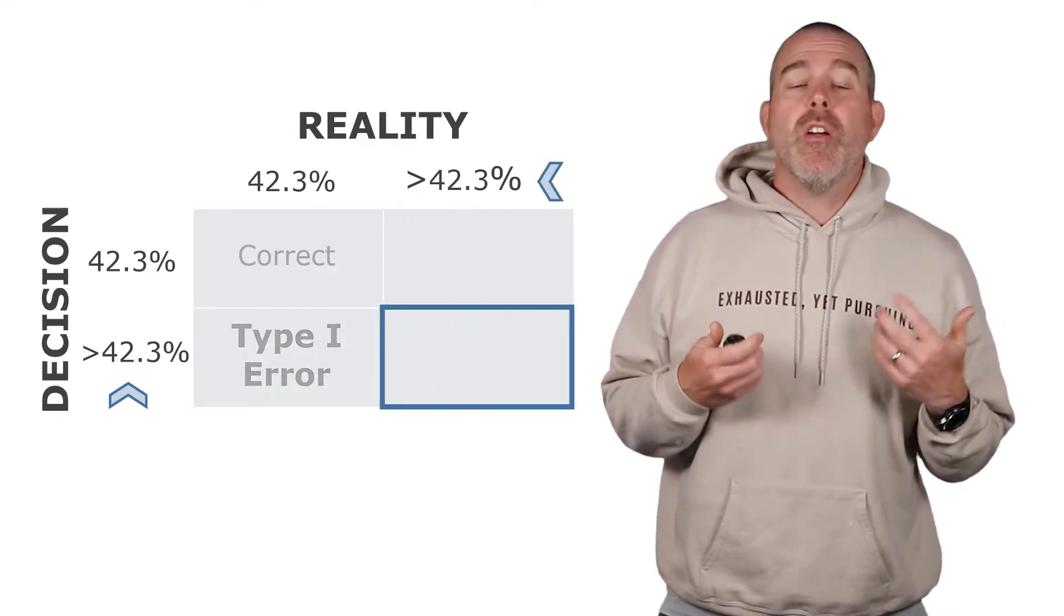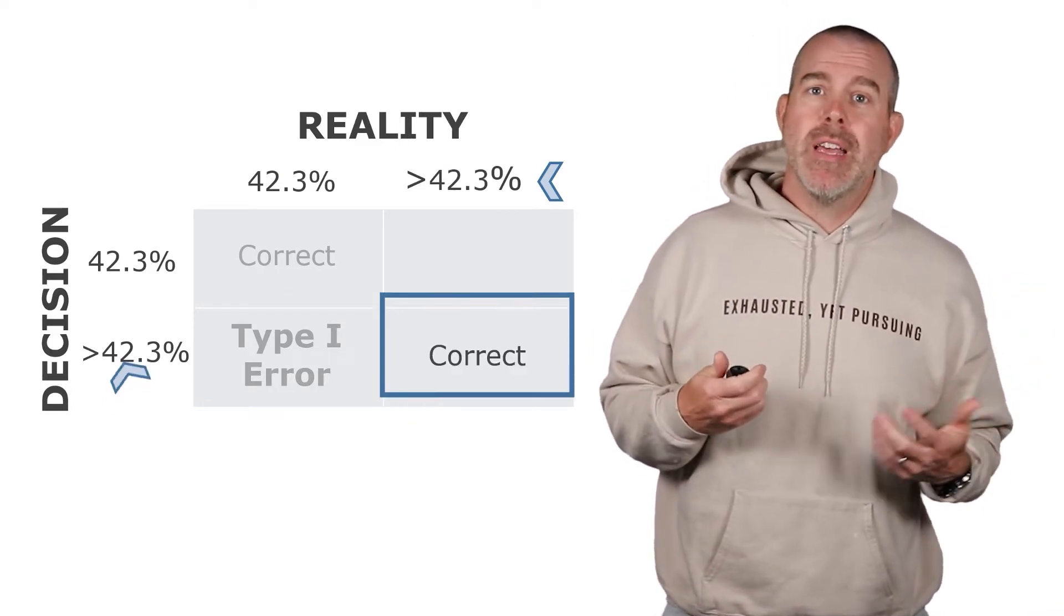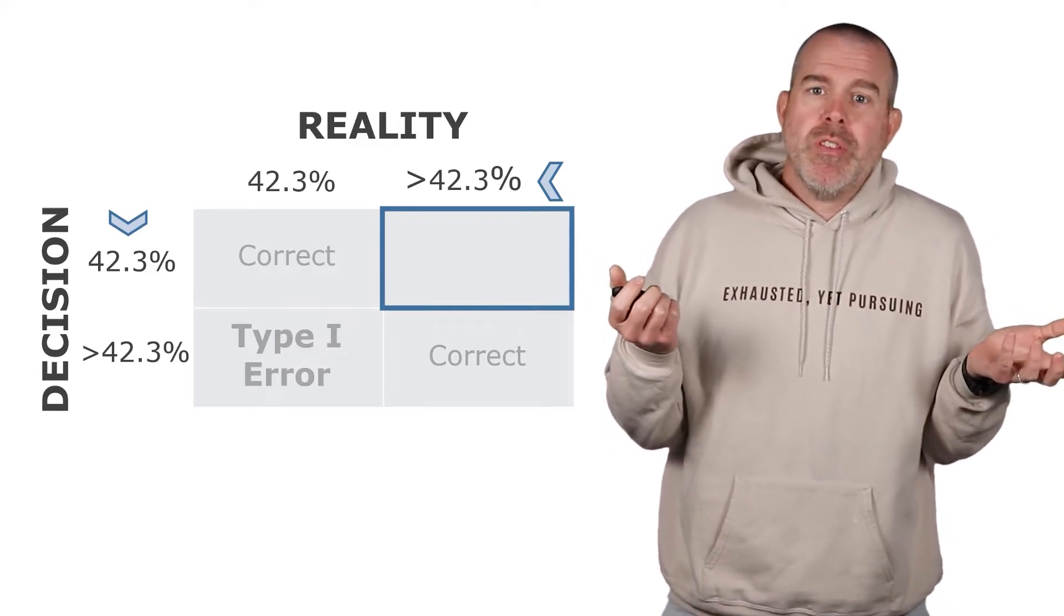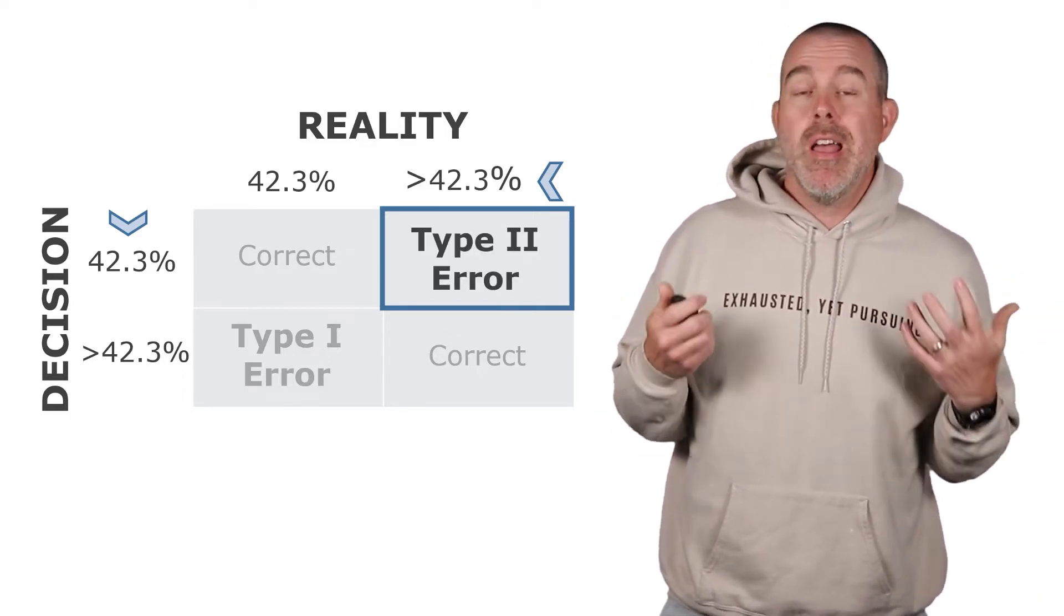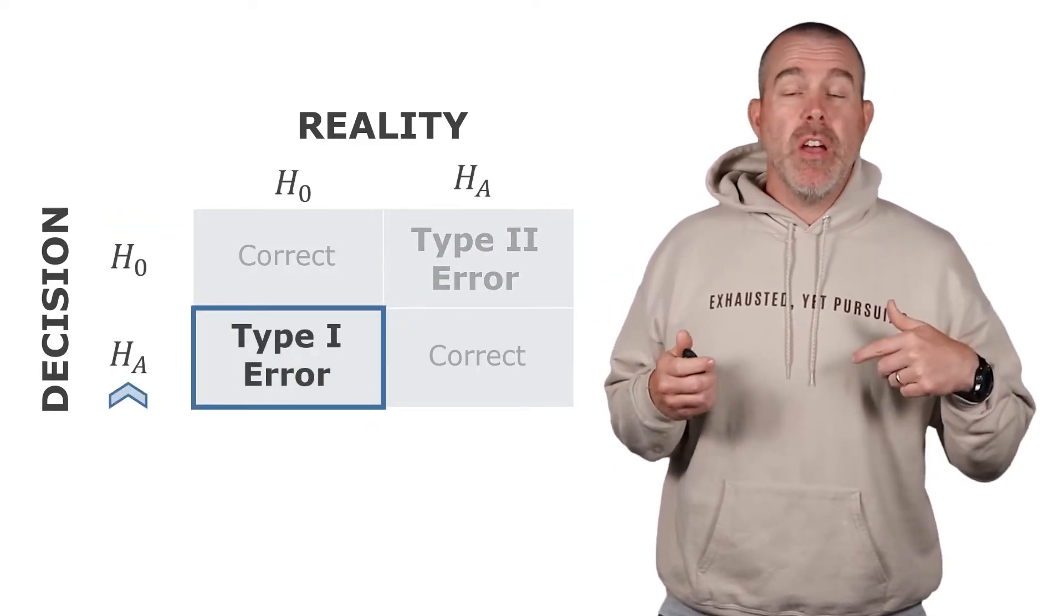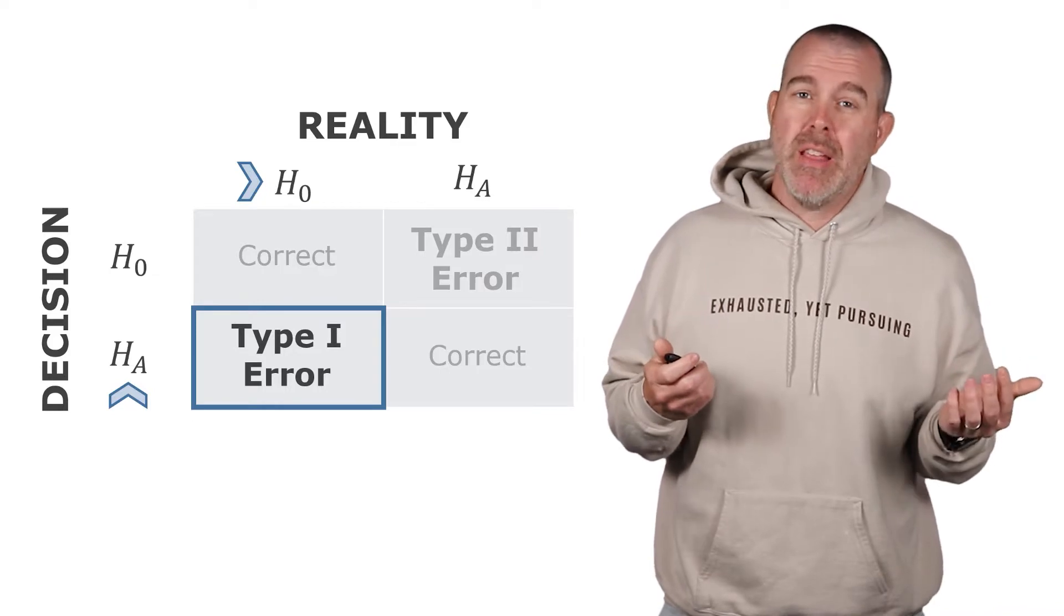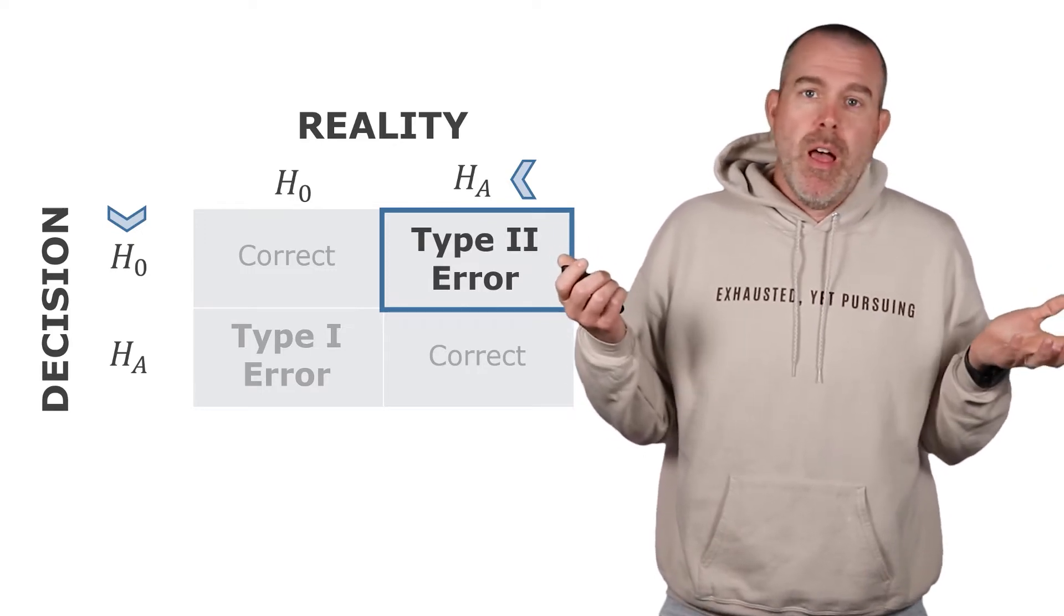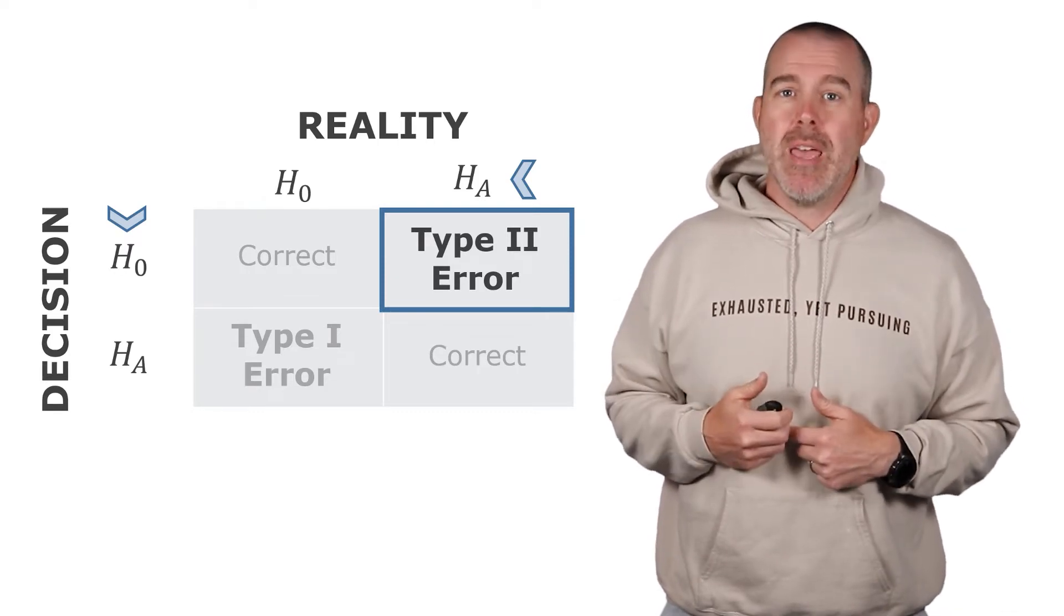Moving over here, we decided it's greater than 42.3% and it actually was greater, that would be correct. And then the top right one, we didn't reject the null hypothesis. We said it looks like it could be 42.3%, but actually it was greater - that's the type two error when you don't reject the null hypothesis but you should. If we generalize this, the type one error is you reject the null hypothesis, you say the alternative is true, but really the null hypothesis is true. Type two is you didn't reject the null hypothesis, you said maybe the null could be true, but you should have - the alternative hypothesis was actually true.